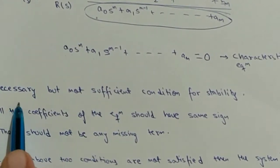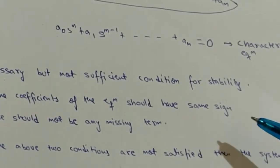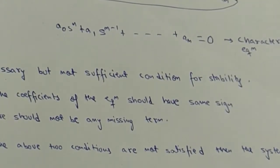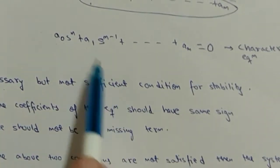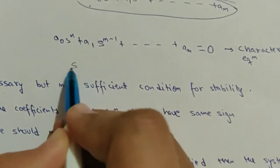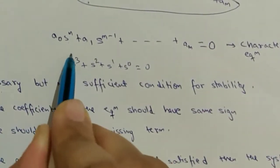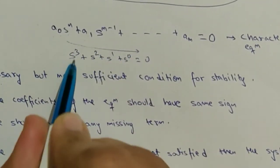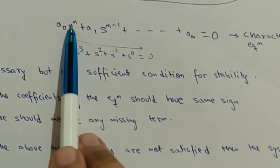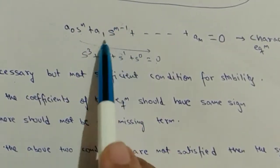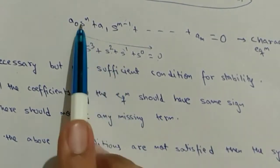The second condition is there should not be any missing term. All powers of s should be present in decreasing sequence. It should not be the case that power n is given, then n-2, but n-1 is missing. That equation cannot be stable. For stability, no term should be absent.